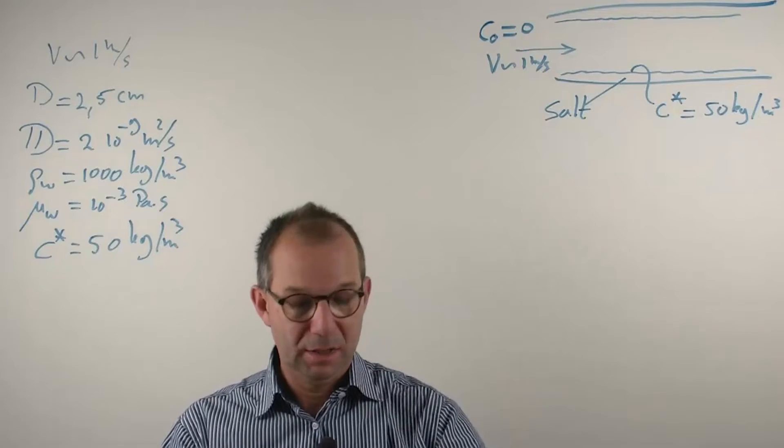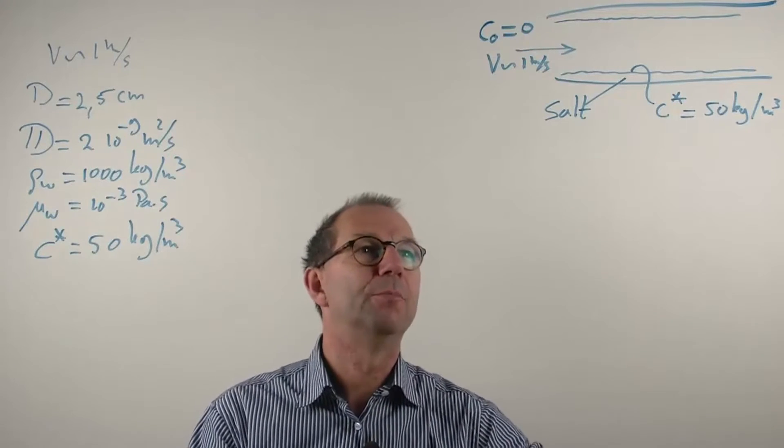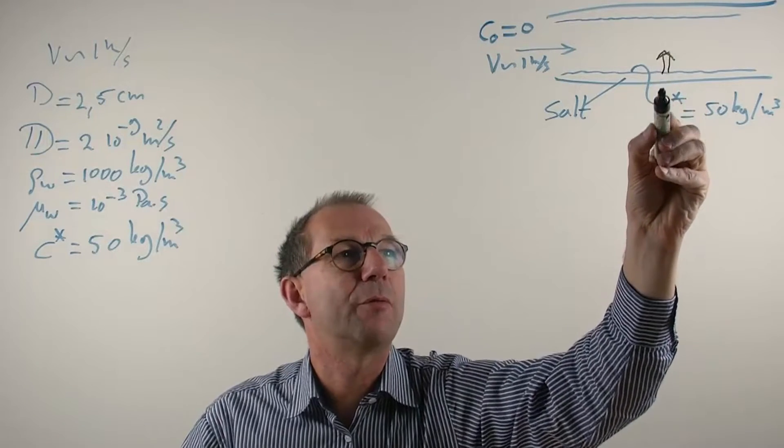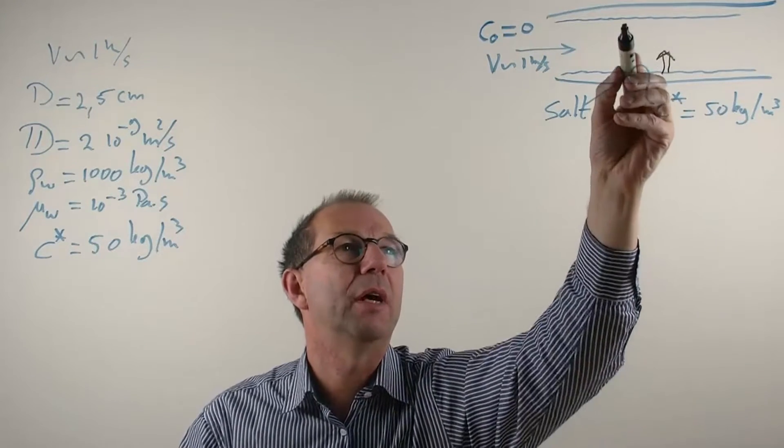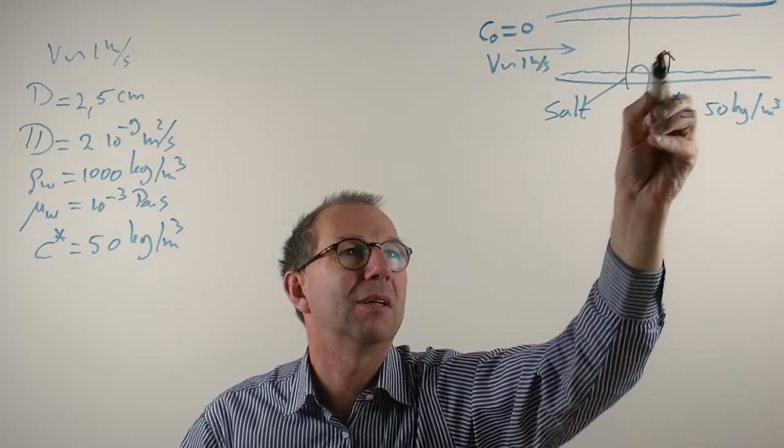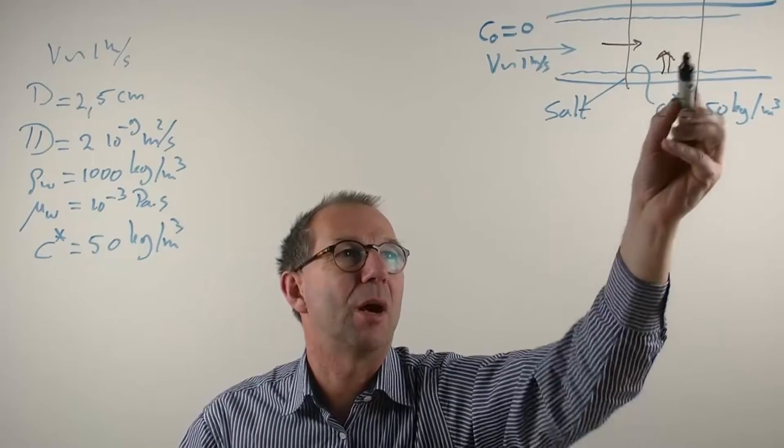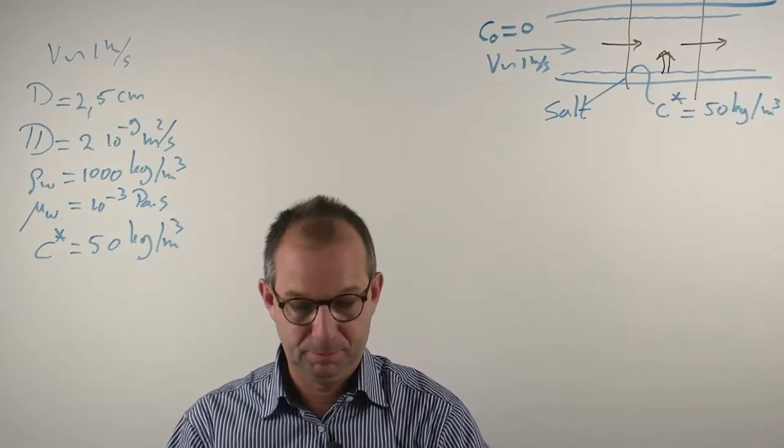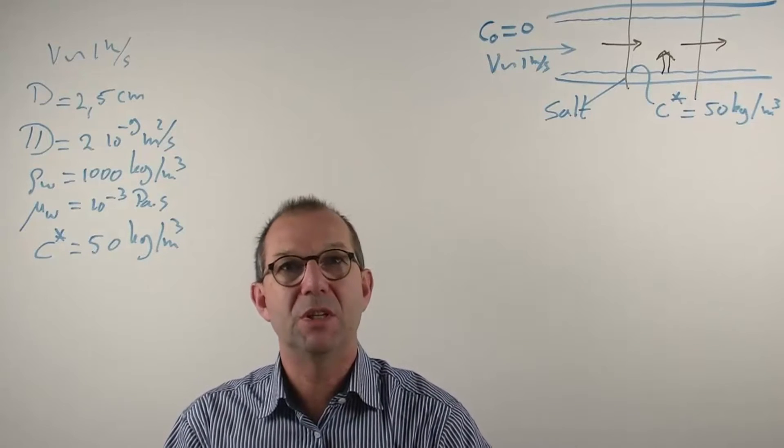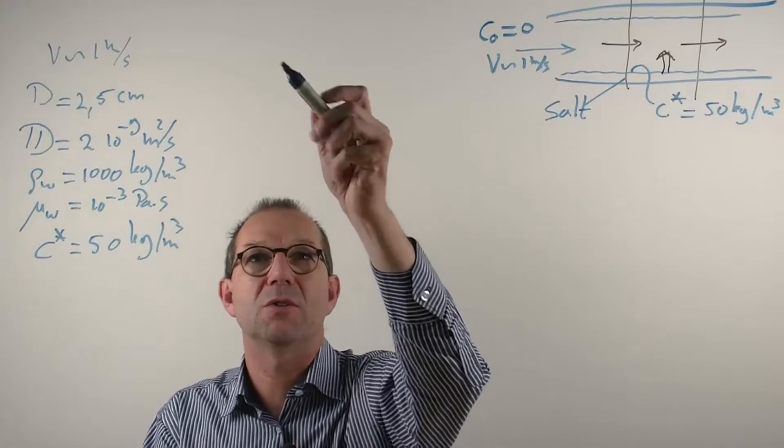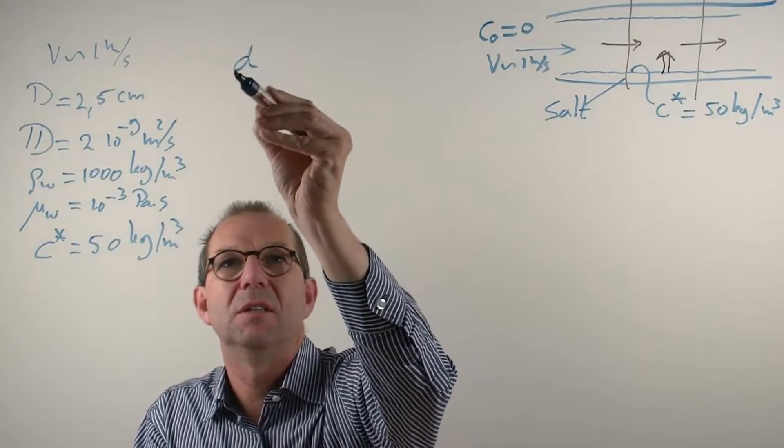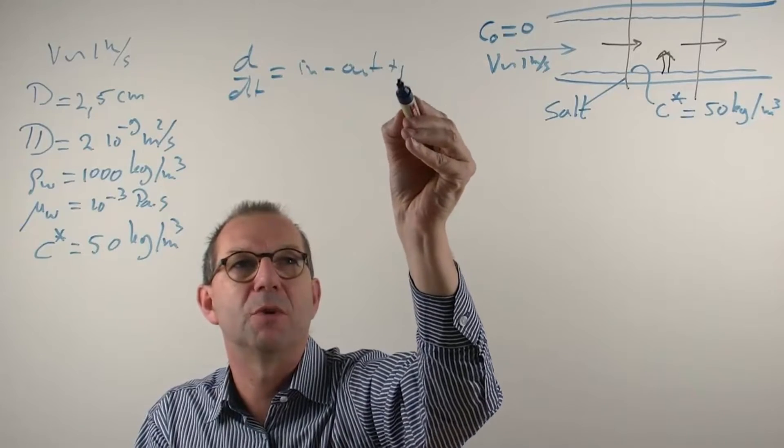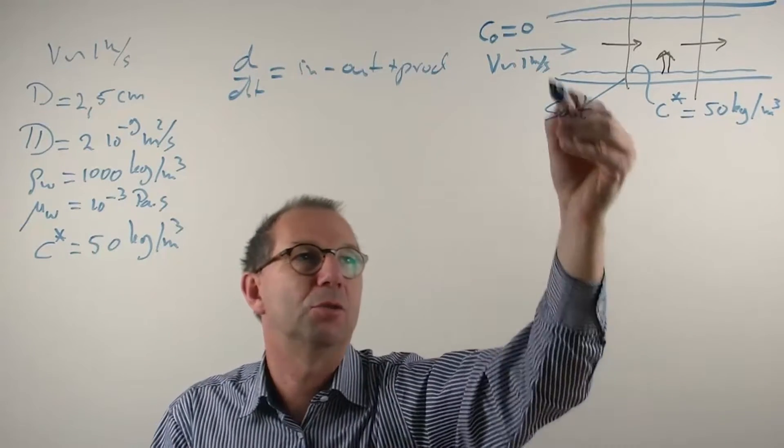Now obviously there are different flows involved. Mass transfers. From here stuff is diffusing inwards from the salt layer, whereas from the sides stuff is coming in via convection because water is flowing and salt is going out. We're going to set up a steady state balance. So we're going to use our standard formulation, dD/dt equals in minus out plus production applied to this particular case.